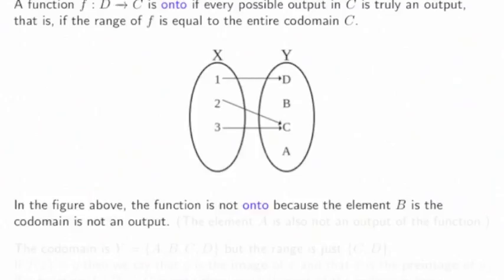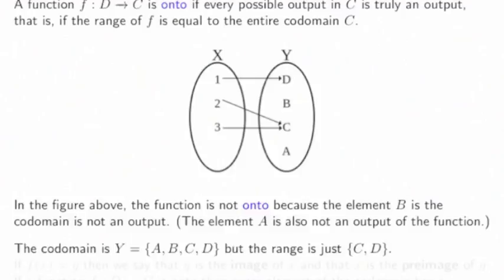In the figure above, the function is not onto because the element B in the codomain is not an output. The element A is also not an output. The codomain is Y = {A, B, C, D} but the range is just {C, D}.